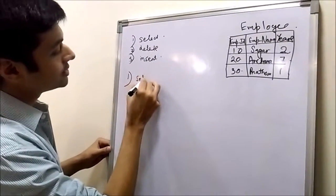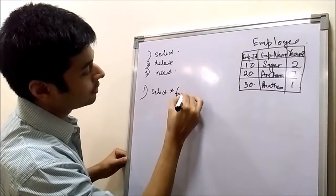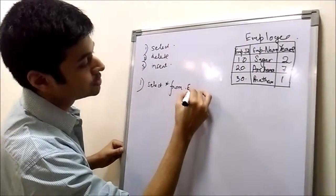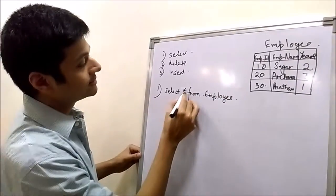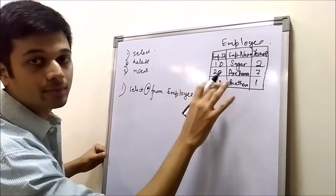So we will write it here, select star from the table name, which is employee. This indicates the whole values, all values from the table.